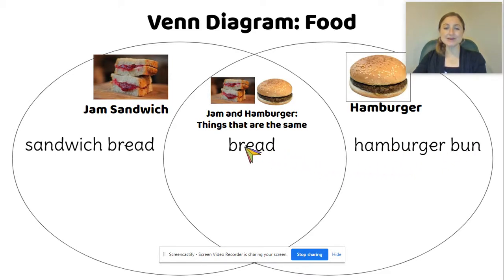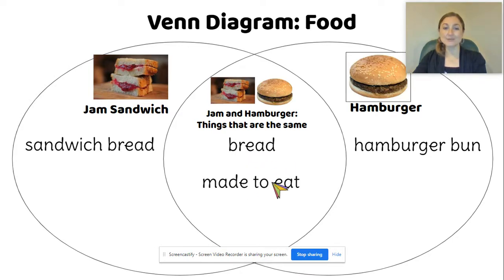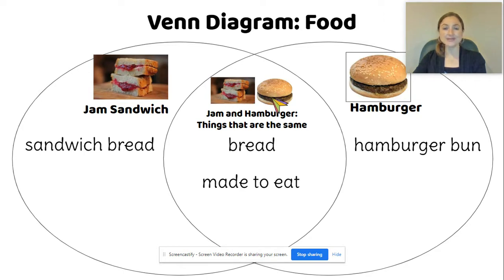Let's think about another thing that's the same, and let's put that in the middle. Both of these were made to eat — so I wrote "made to eat" — because we can eat a jam sandwich, and we can eat a hamburger.